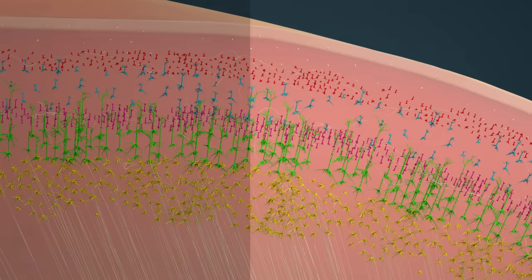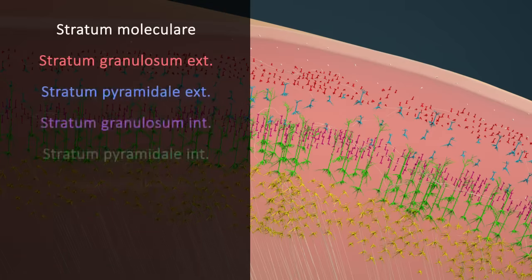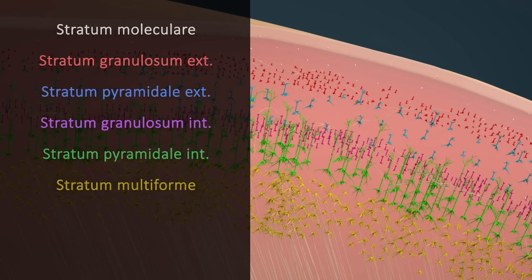The cerebral cortex consists mainly of six layers. For the sake of clarity, only a few cells and nerve fibers are shown here.